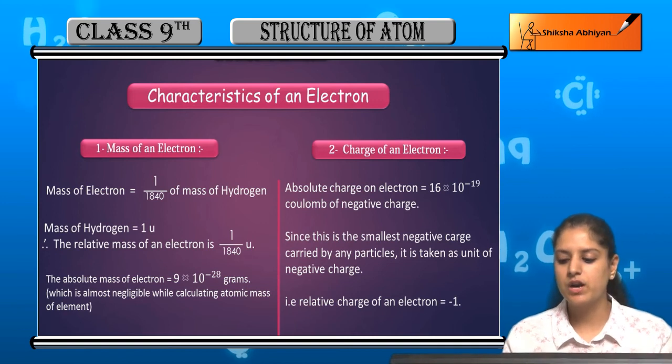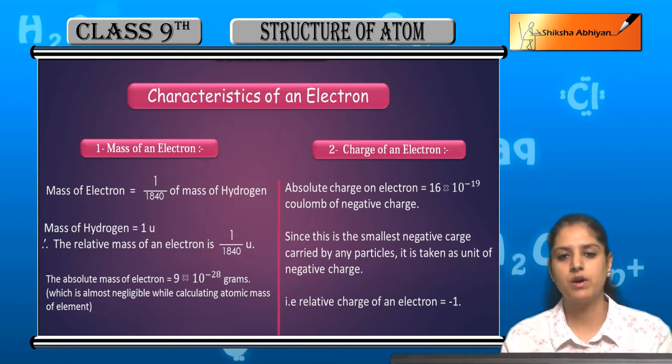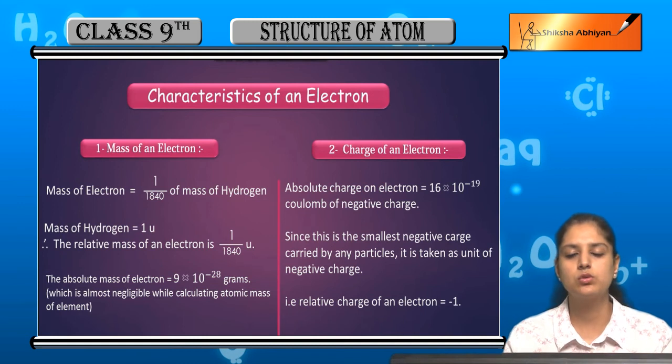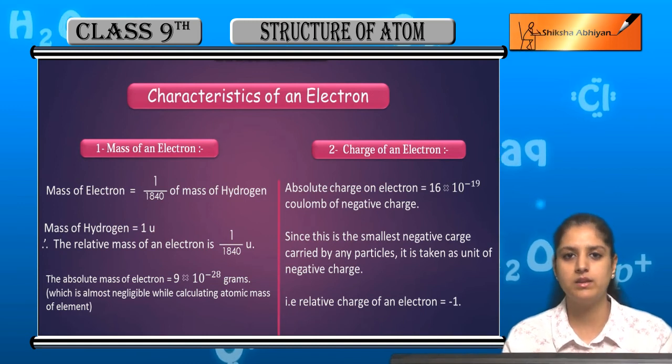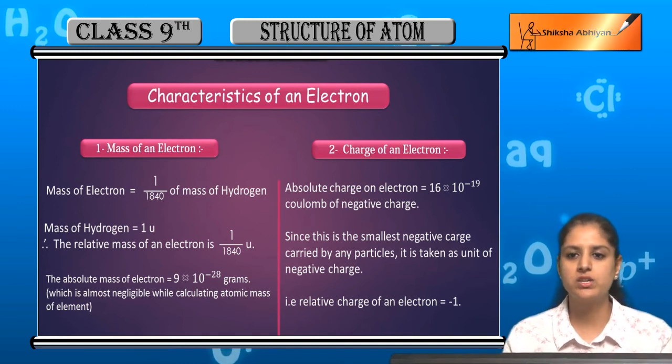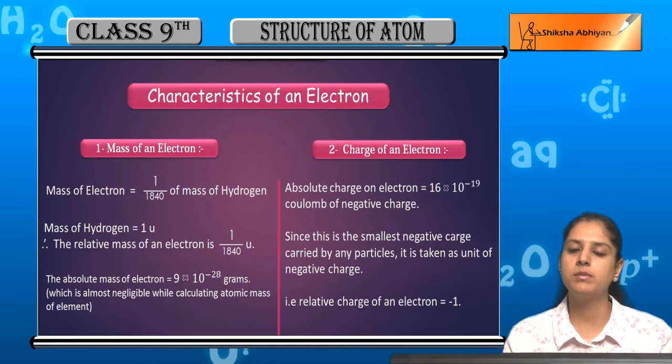That is, the relative charge of an electron is -1. We have taken it as a standard, so we have given it the category of -1. 1 means unit charge, minus is there because we are talking about negative charge.